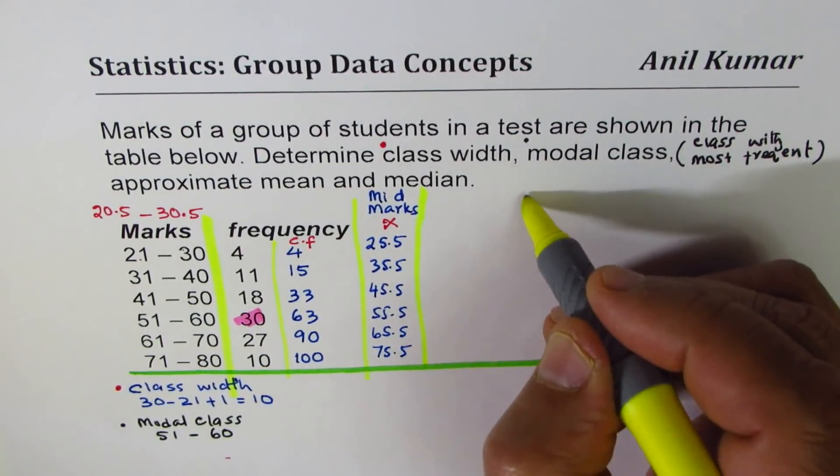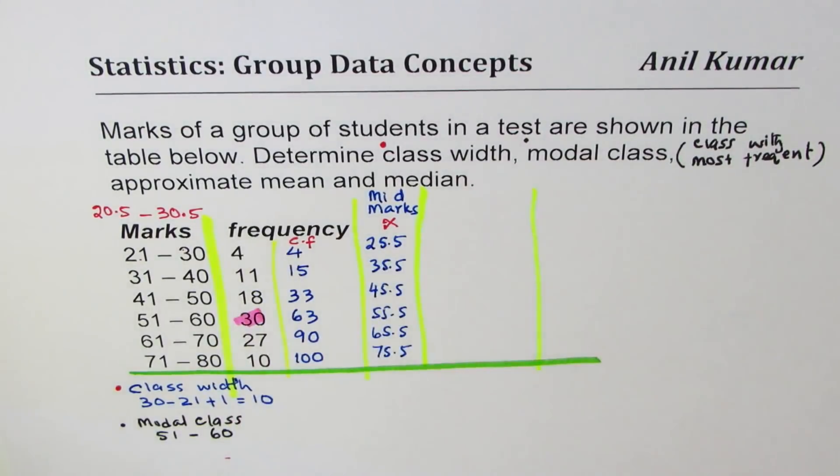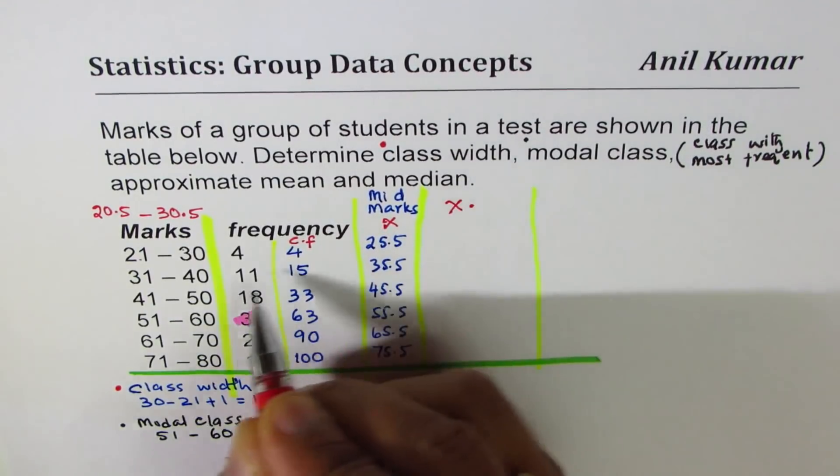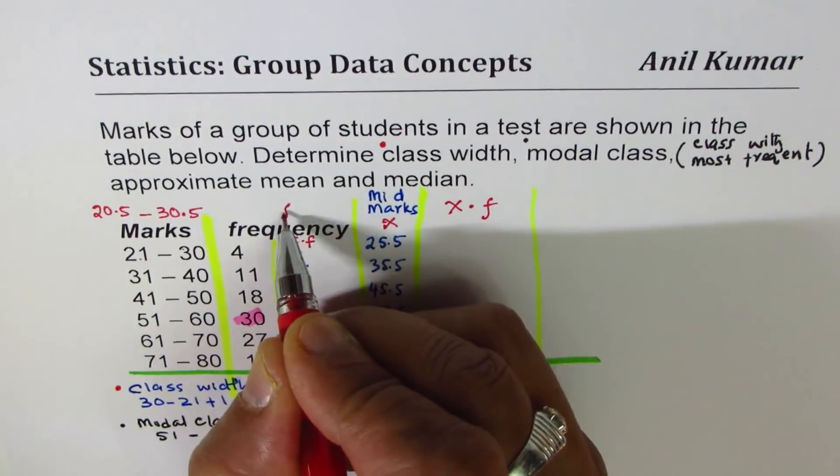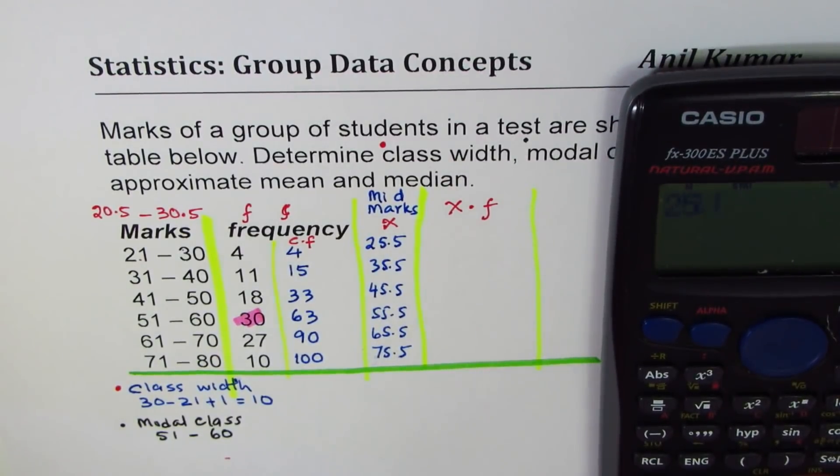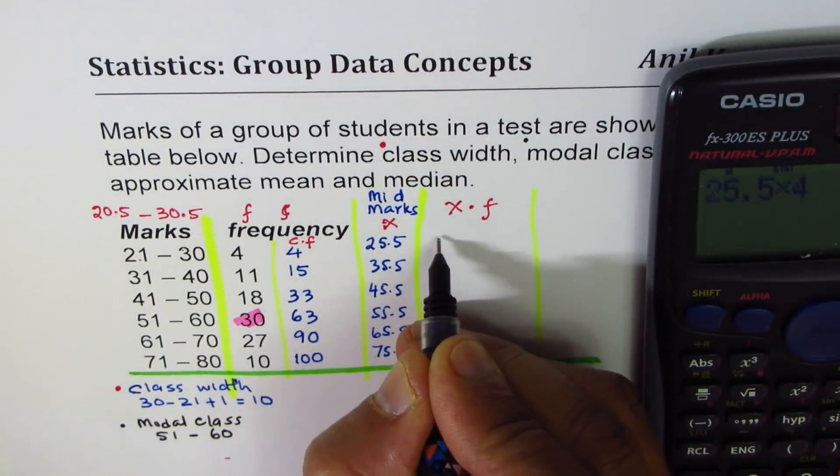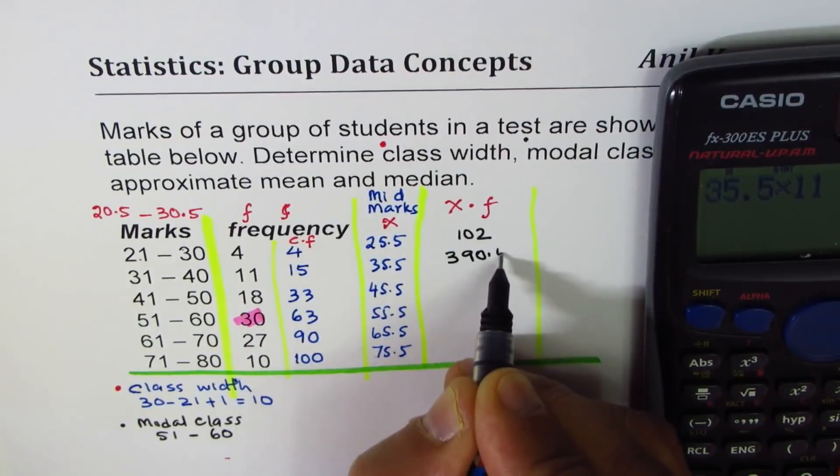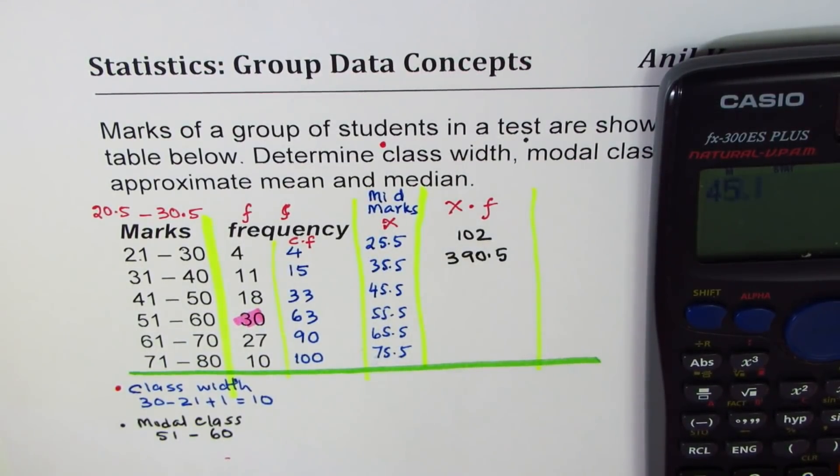Then create a column by multiplying this mid value with the frequency. Let me write this as x times frequency f. So let's do this calculation. We have 25.5 times 4 equals 102, then we have 35.5 times 11 equals 390.5, 45.5 times 18 equals 819.